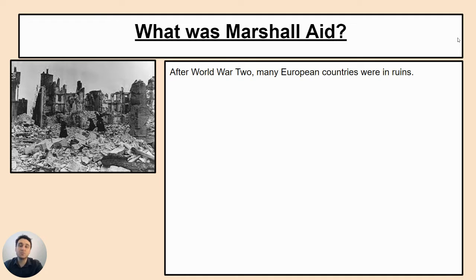At the end of last lesson, we looked at the Truman Doctrine, and Marshall Aid is closely linked to that. We left that lesson saying that Marshall Aid was announced. So what was this? Well, after World War II, many European countries were in ruins — pretty much destroyed, and they were going to find it very hard to recover.